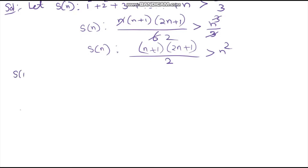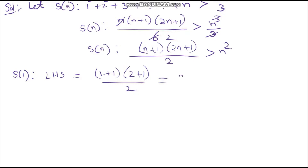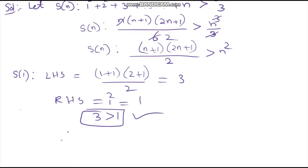For S of 1: LHS equals (1 plus 1) into (2 plus 1) by 2, which equals 3. RHS equals 1 squared which is 1. Since 3 is more than 1, this is true. Therefore S of 1 is true.